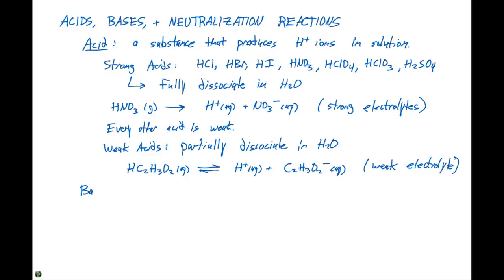In addition to the acids, we have bases. And a base is defined as a substance that produces OH minus ions in solution. And typically when we look at bases, we can identify a base because its formula ends in OH. The strong bases are all the group one hydroxides and the heavy group two hydroxides.